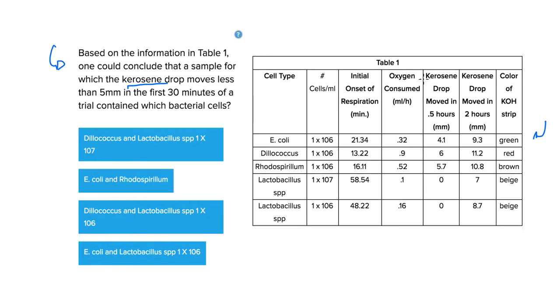We see the words kerosene drop show up here twice, so we're gonna be looking at this part of the table. For it to have moved less than five millimeters, all these measurements are in millimeters, so we're only looking at values less than five. We'll be looking at this one here for E. coli, this one for the Lactobacillus spp, and this one for the Lactobacillus spp of a different number of cells per milliliter.